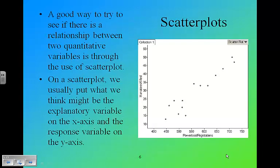A good way to see if there's a relationship between two quantitative variables is through the use of a scatter plot. You can see an example of one here. On a scatter plot, we usually put the explanatory on the x and the response variable on the y. This scatter plot shows a relationship between the number of power boat registrations in the state of Florida, measured in thousands, versus the number of manatees that are killed on a yearly basis. You can see that as the power boat registrations increase, the number of manatees killed increases as well.